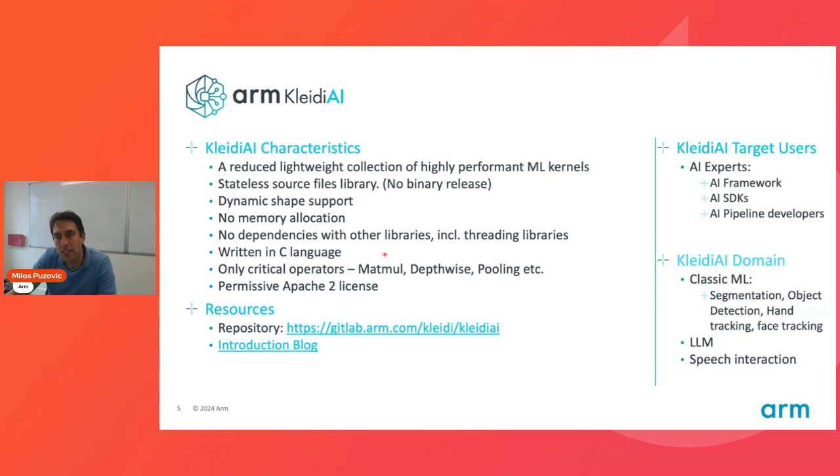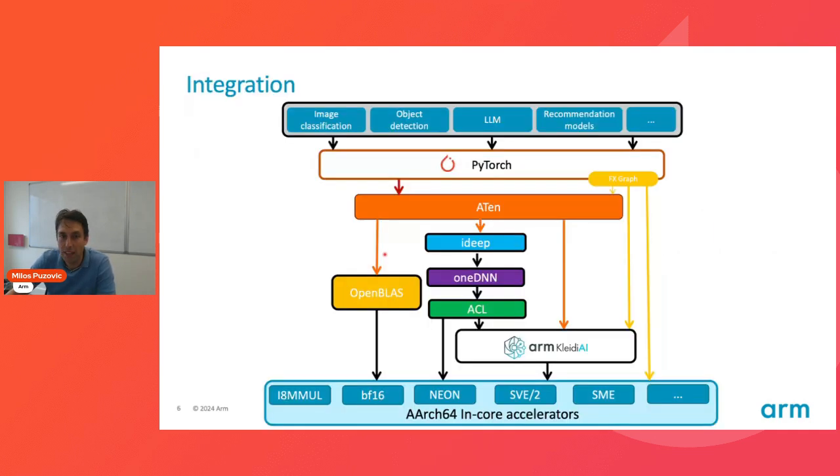As a result of this, the target users, who are AI experts for the AI frameworks, who are building the frameworks, SDKs, and the pipelines, can use this library in different domains, including the classical ML such as segmentation, object detection, hand tracking, face tracking, and also the gen AI use cases, like large language models, to fairly quickly accelerate their frameworks, so that they can make the best use of the ARM platforms, as you can see illustrated in this next slide.